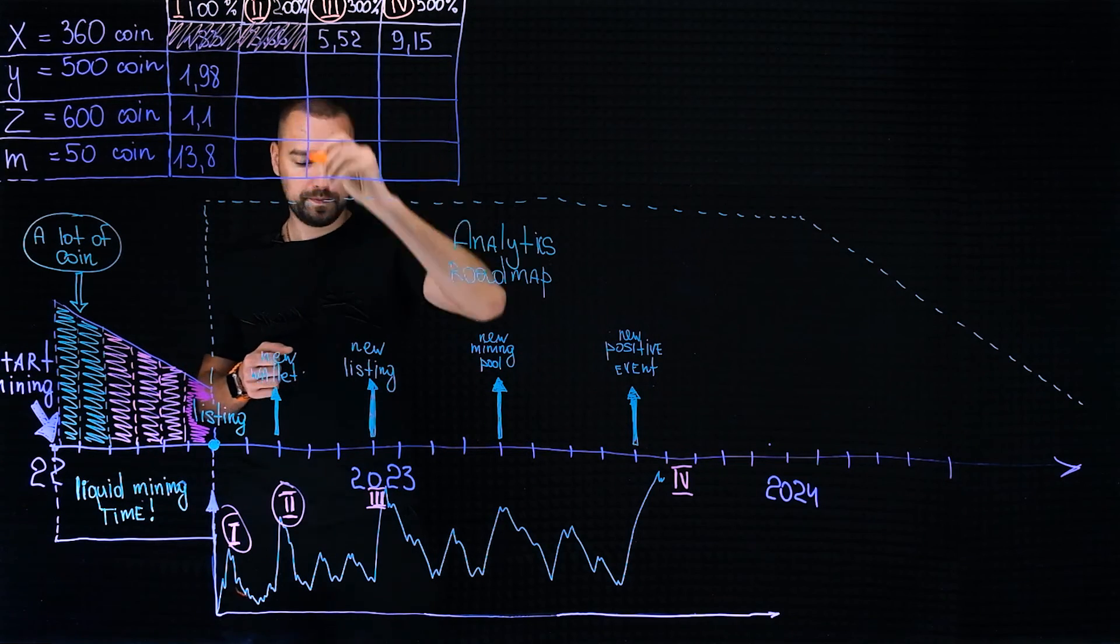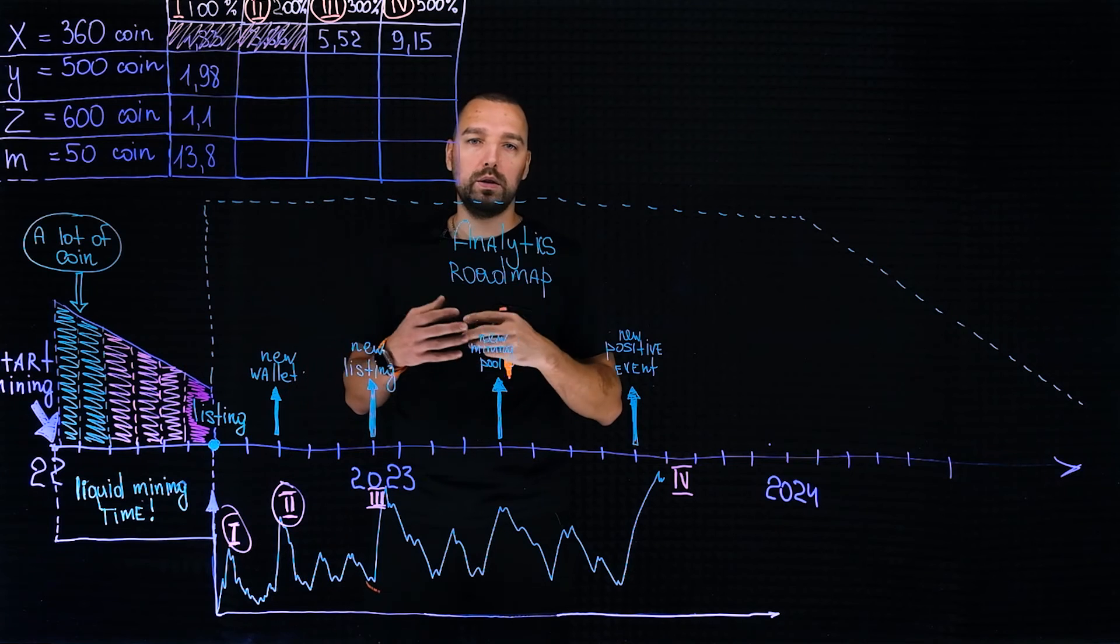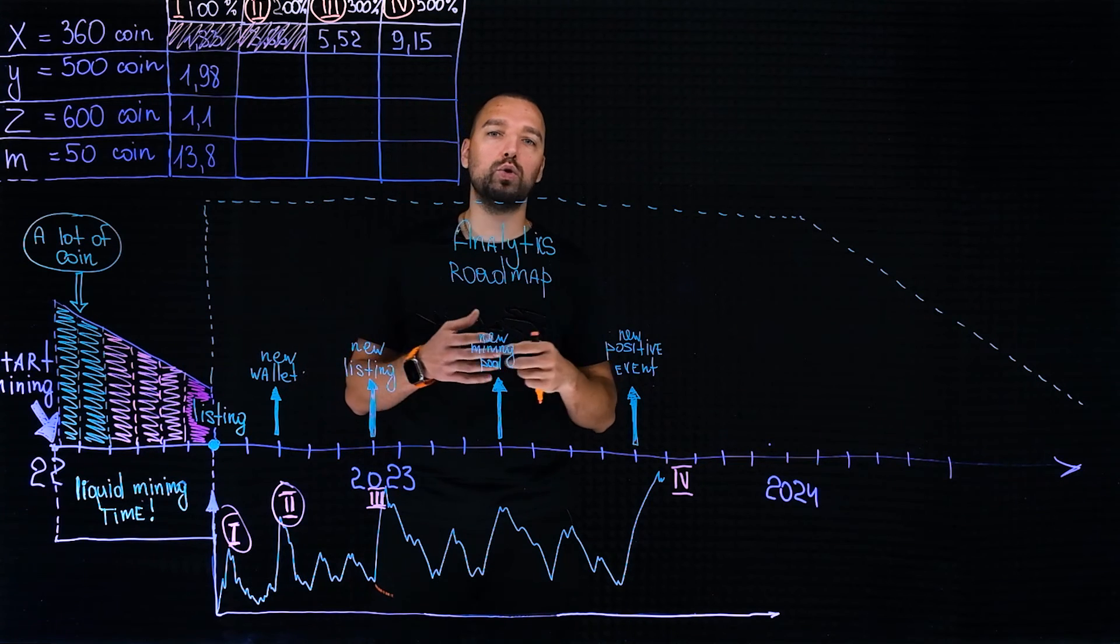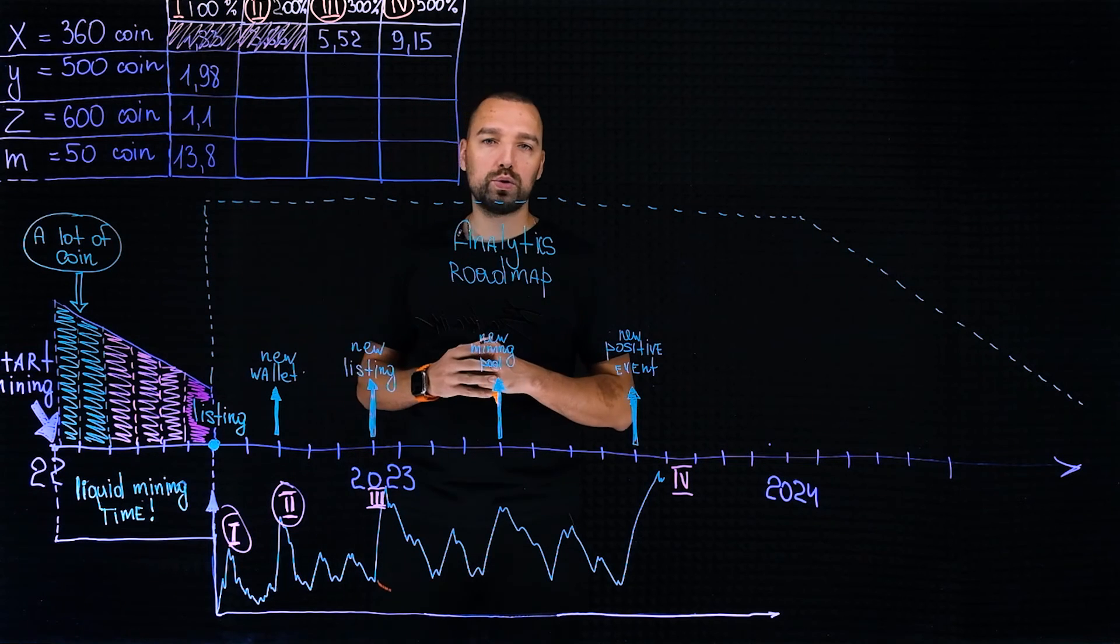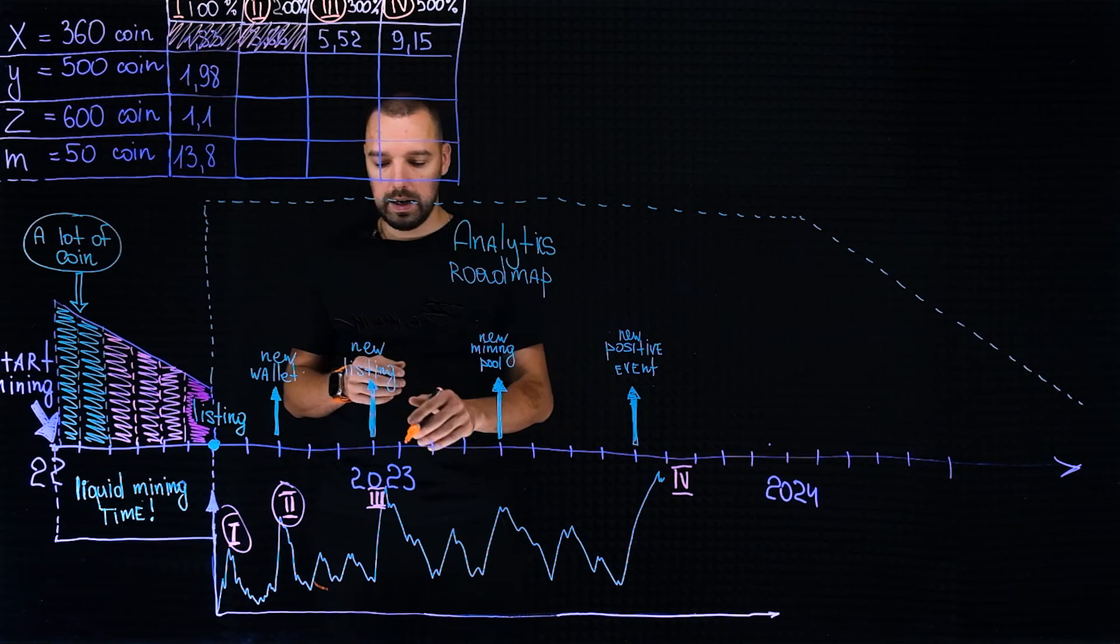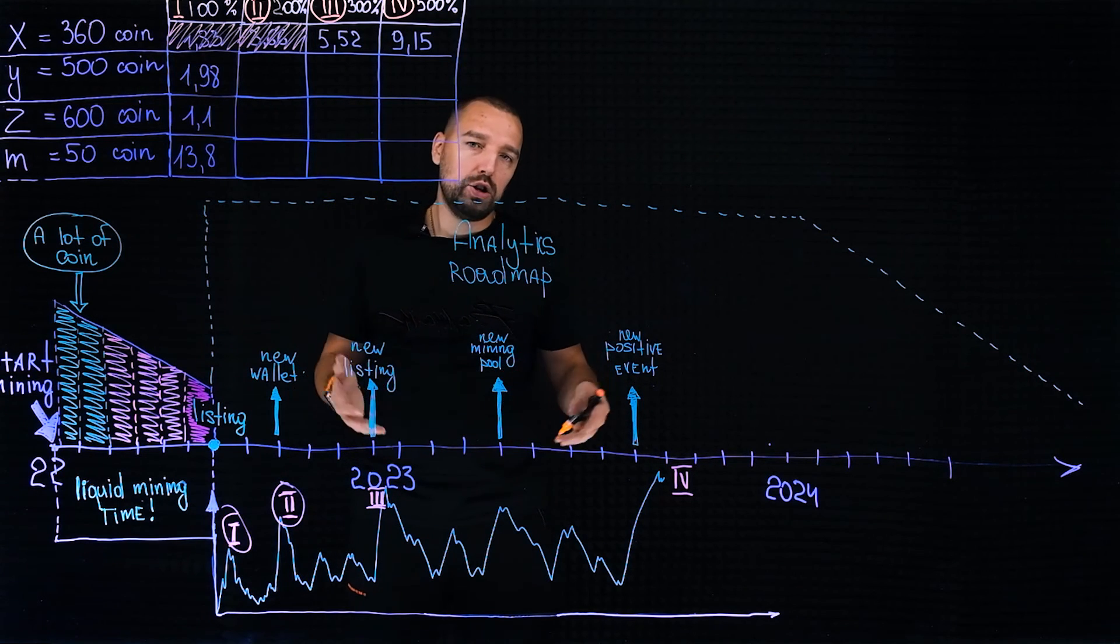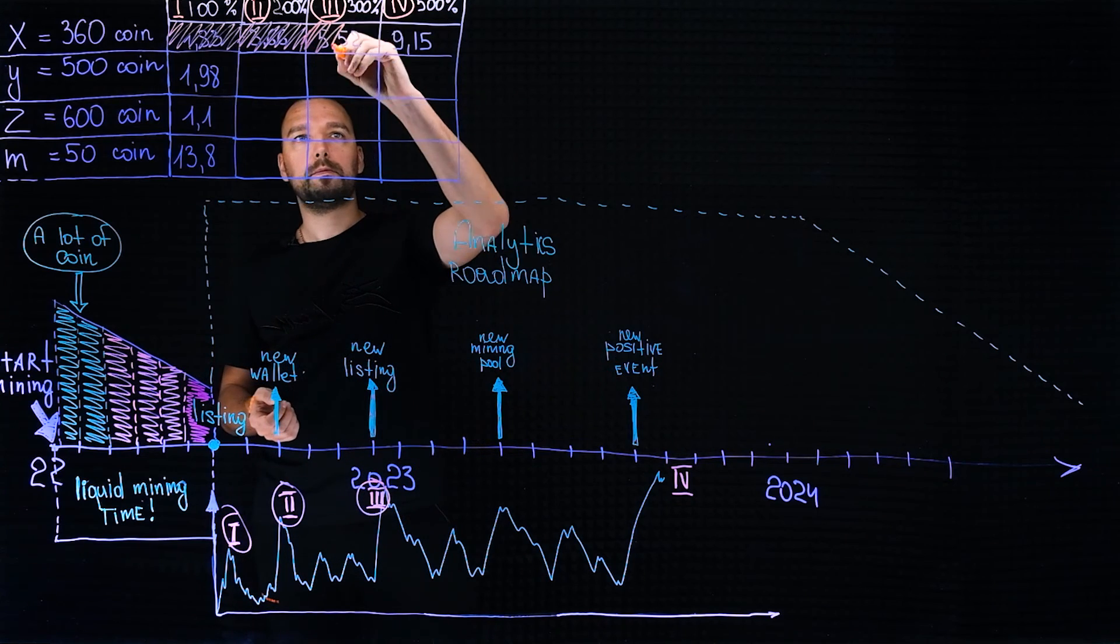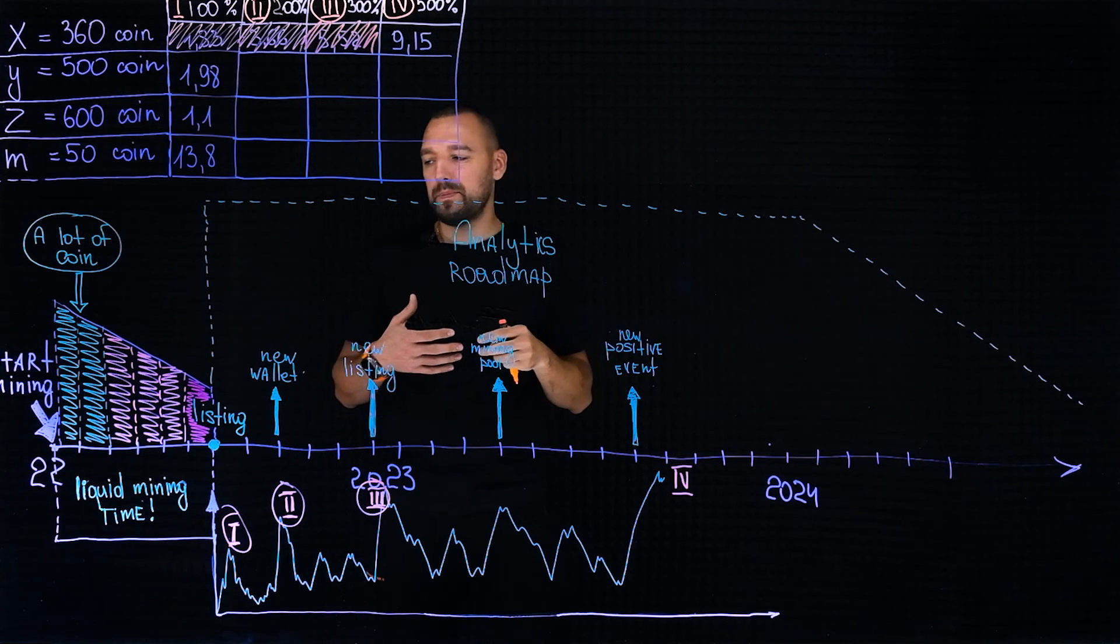The second order is closed. With the passage of time, we learn that the coin goes to a new exchange, a new listing. As a rule, a new listing is another surge in the value of a coin. Our order at the rate of 5.52 has already been placed on the primary exchange and is awaiting its growth. As soon as the coin is listed on the exchange, this is another surge of purchases, another increase in the exchange rate, and accordingly the third order is also closed.